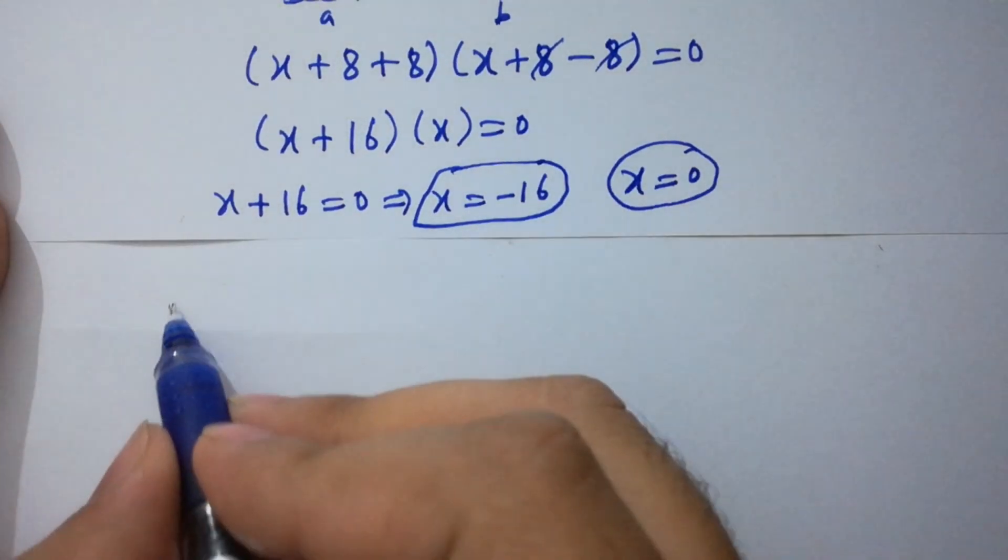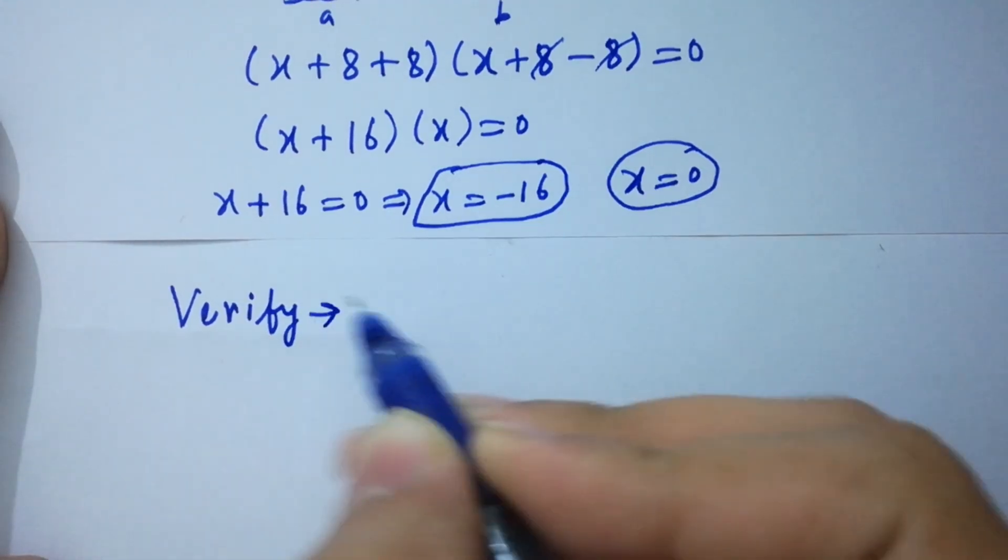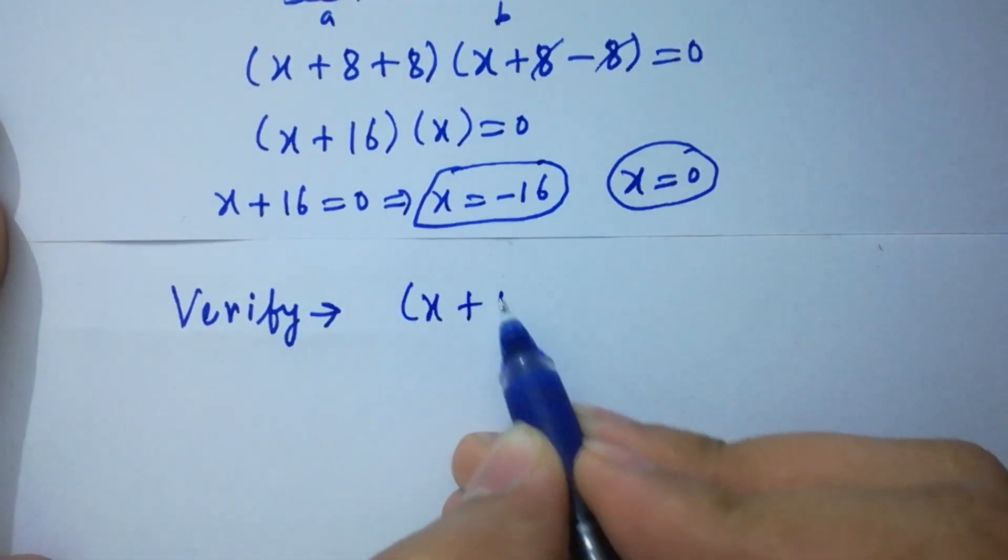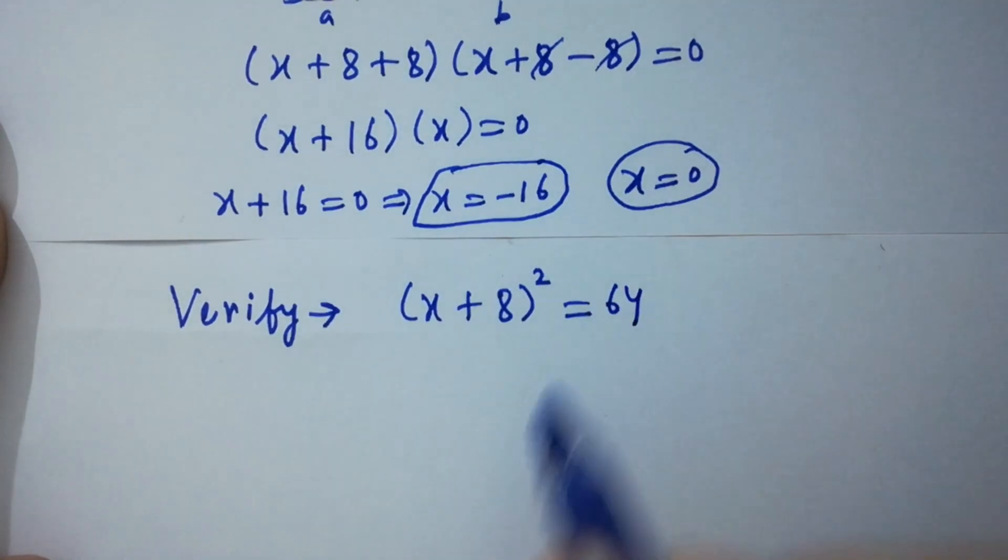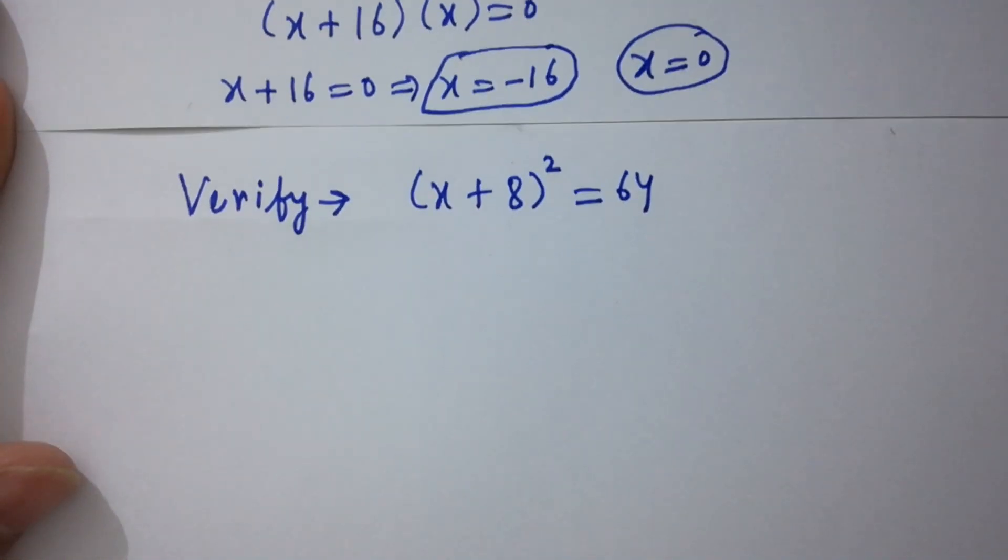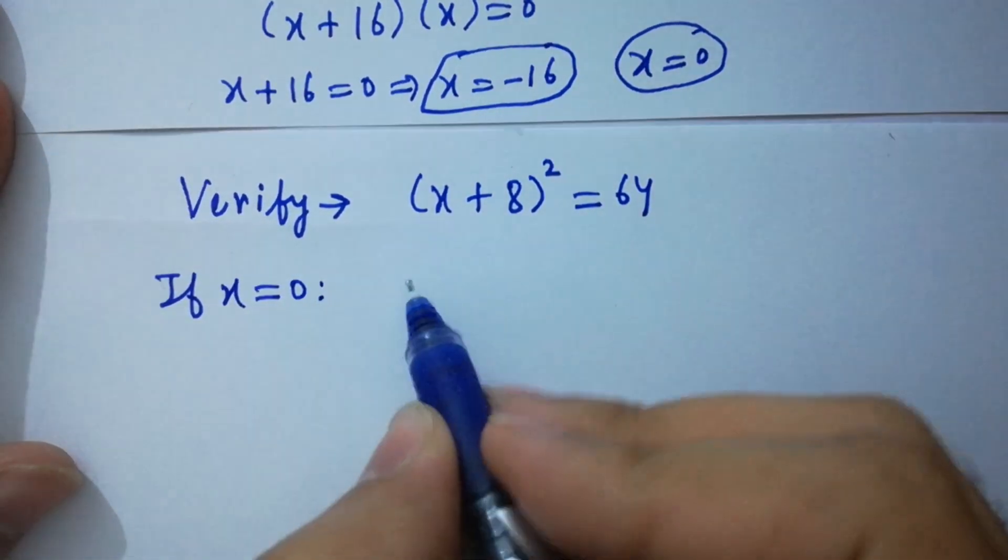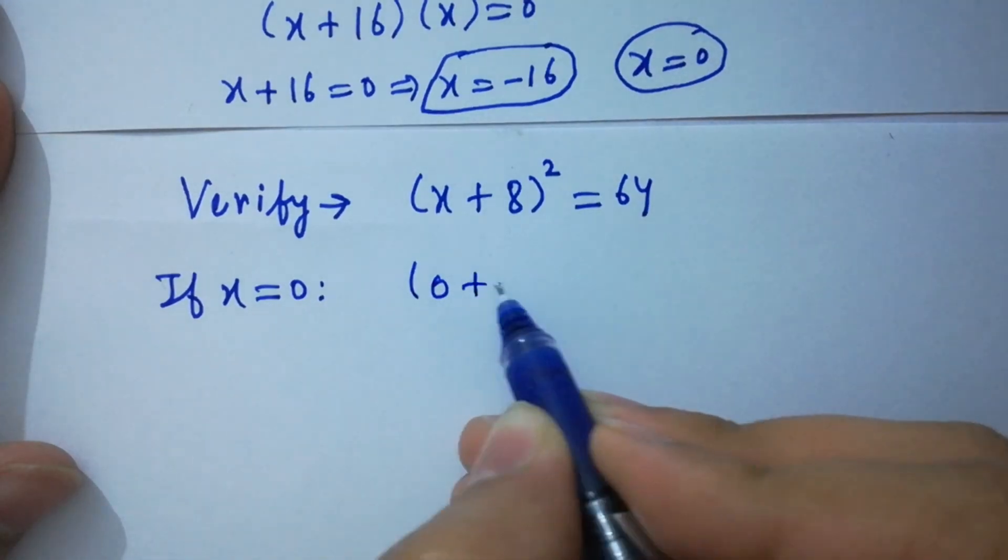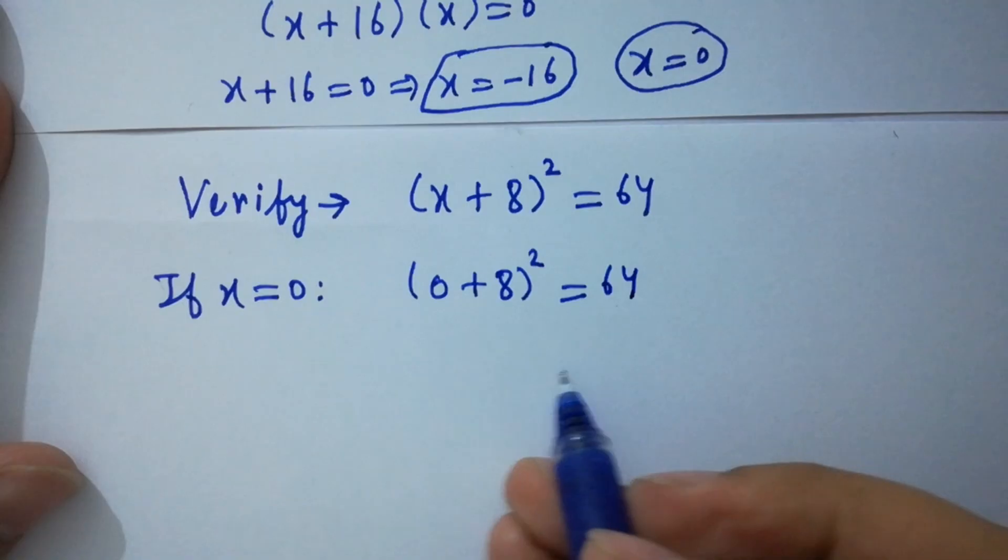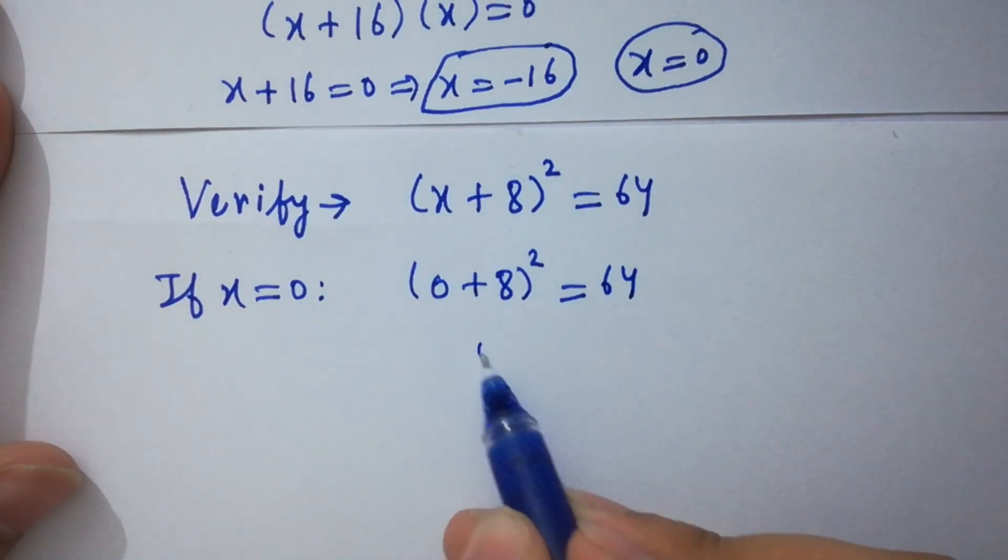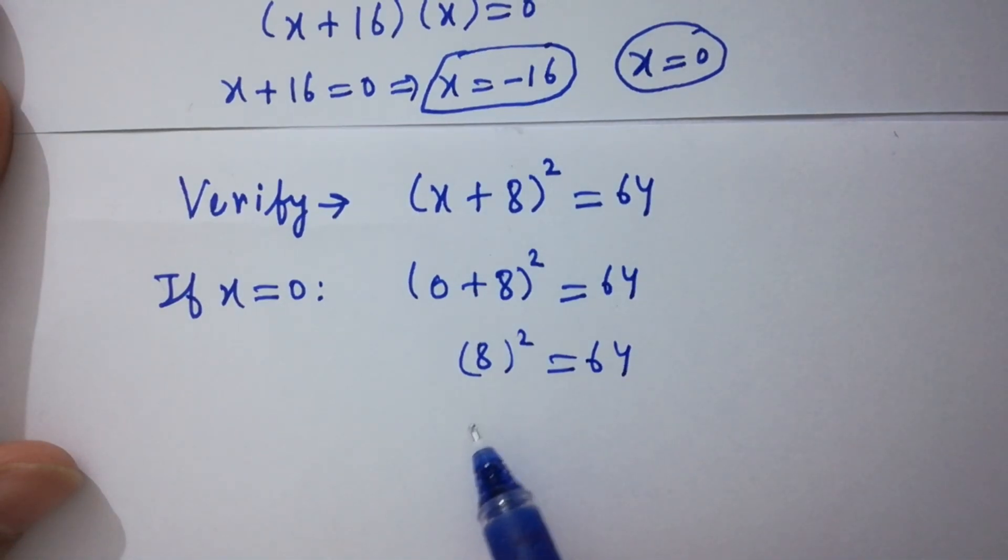Verify: (x + 8)² = 64. If x = 0, then (0 + 8)² = 64. 8² = 64, so 64 = 64.